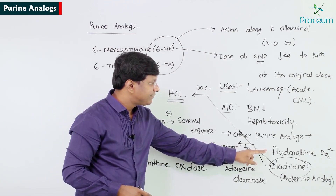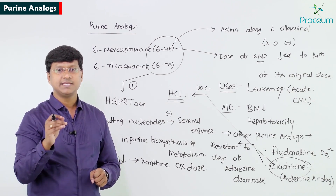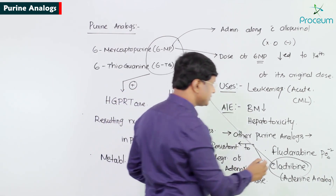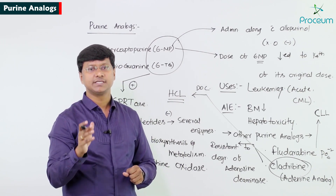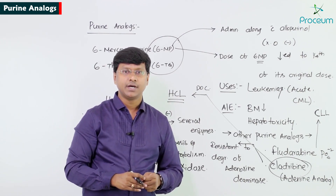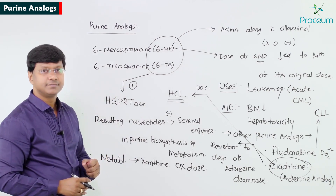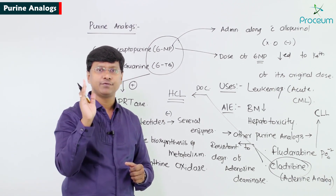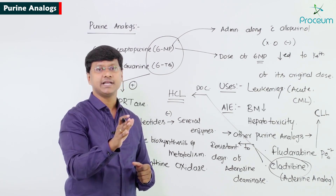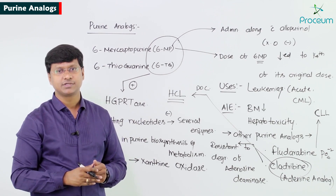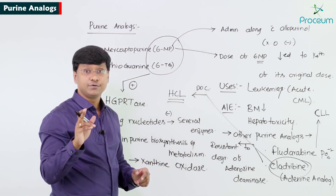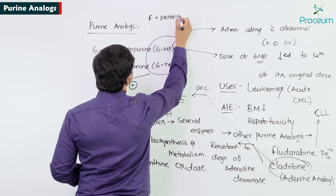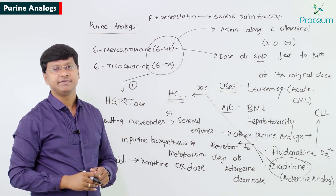Fludarabine phosphate is the drug of choice for the treatment of chronic lymphocytic leukemia. When fludarabine is used along with pentostatin, that combination results in very severe pulmonary toxicity.